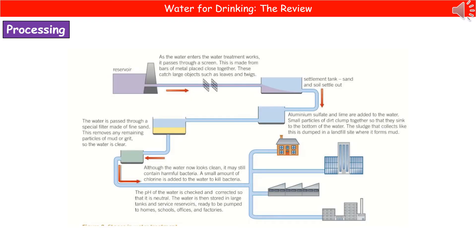We need to know the stages that water goes through in order to be processed to make it safe for us to drink. The first thing that happens is the water enters the processing plant from the reservoir, and as it does so, it passes through a screen. The screen is there to filter out large objects like leaves and twigs, because they'll get caught in that meshwork.